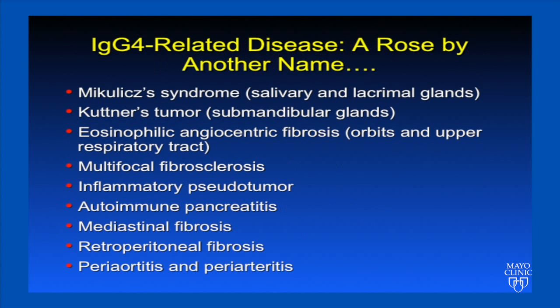Many diseases fall under the umbrella of IgG4-related disease. From an orbital standpoint, we're familiar with McCulloch's syndrome, eosinophilic angiocentric fibrosis, and inflammatory pseudotumor. Other common systemic conditions include autoimmune pancreatitis and retroperitoneal fibrosis.